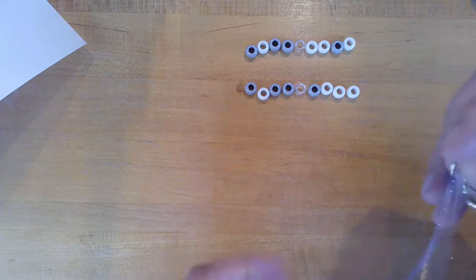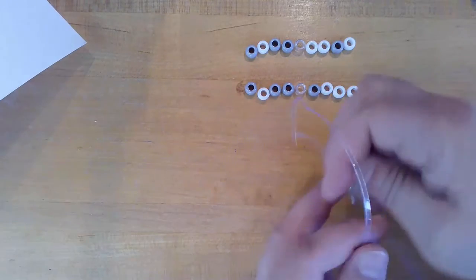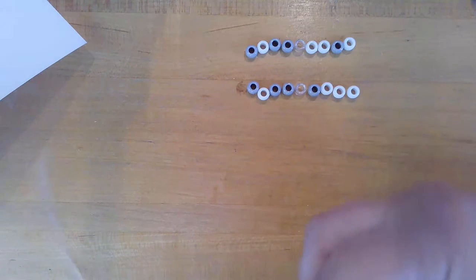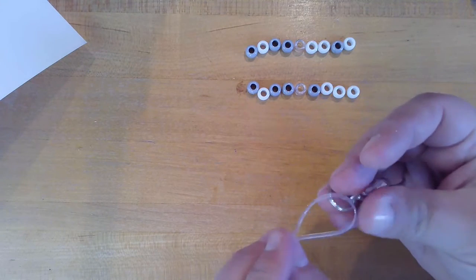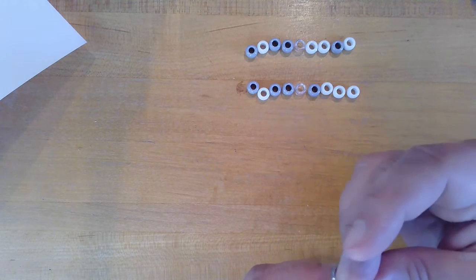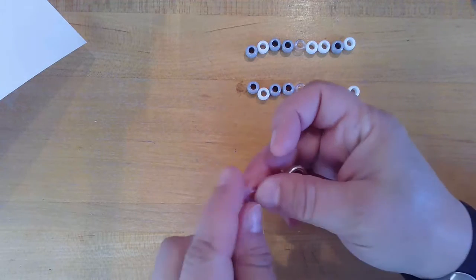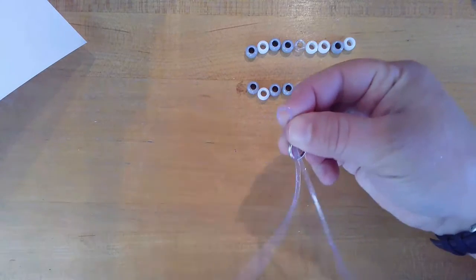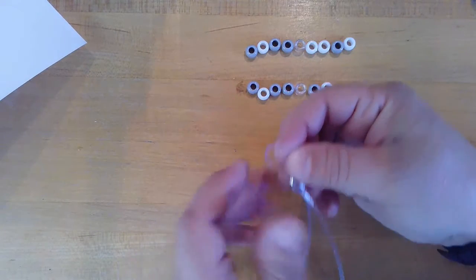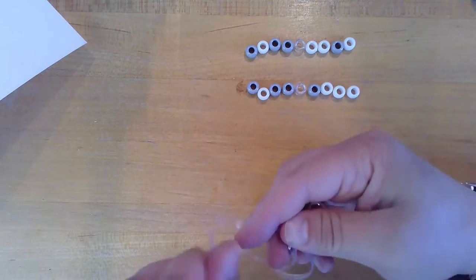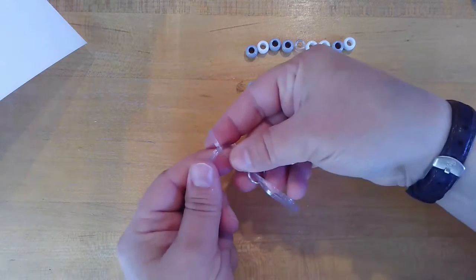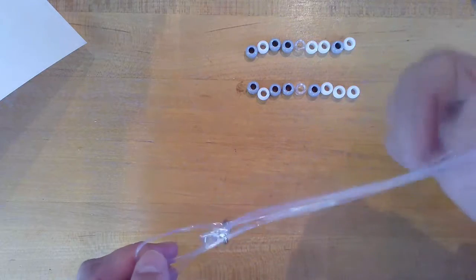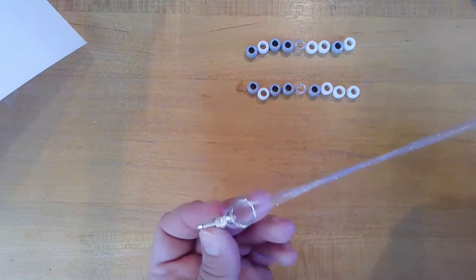Or if like me you're doing just two initials, you can knot it separately in a different way so that you have two strings coming off the ring. You make a loop in the middle, pull it through the ring like that, and then you're going to take your two ends of the cord and pull it through the loop you made and pull it tight onto the ring.